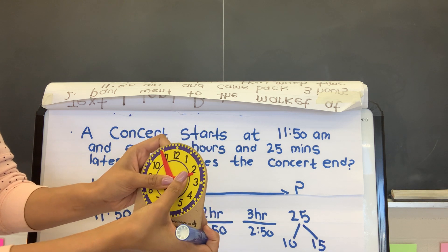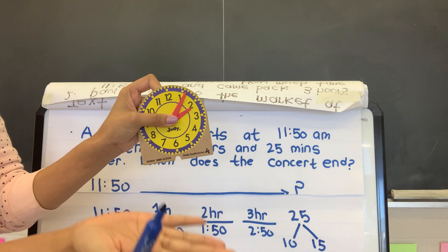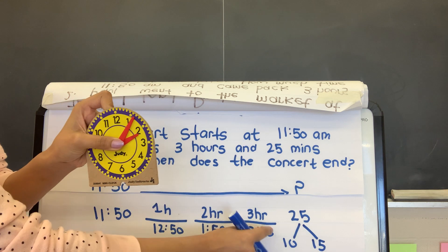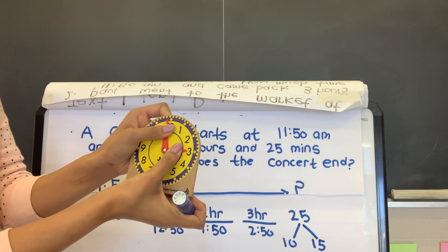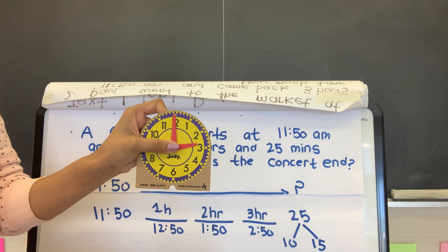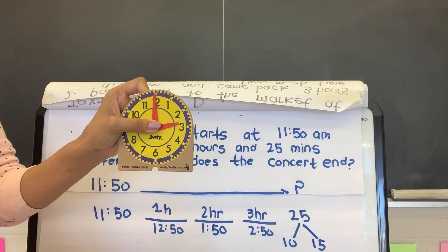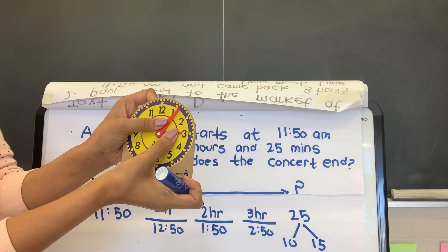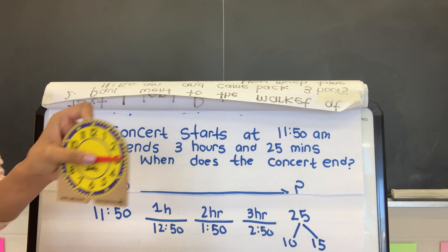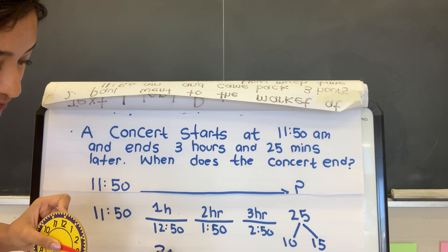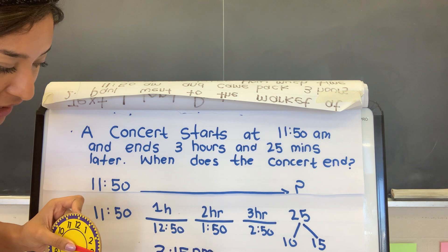And I might forget that actually I need to change my hour. So at 10 minutes, so 2:50, and after 10 minutes, it's 3 o'clock. 3 o'clock, and then 15 more minutes, which means 5, 10, and 15. So the concert ended at 3:15 p.m.